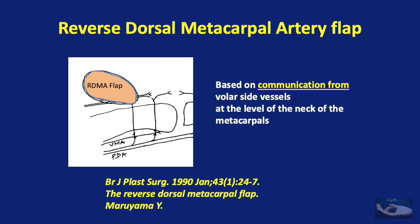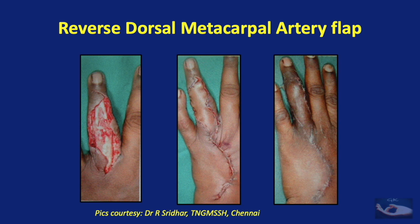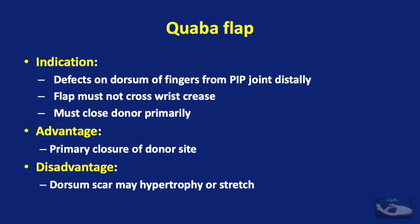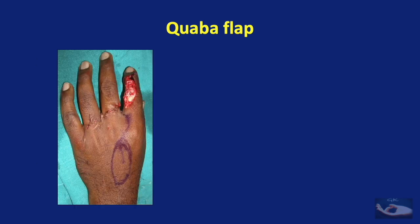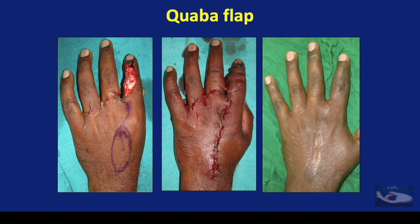The reverse dorsal metacarpal artery flap is based on communication from volar side vessels at the level of the neck of the metacarpals, indicated for defects on the dorsal aspect of the fingers from the metacarpophalangeal joint distally — a single stage procedure. The Quaba flap is based on communication from the bifurcation of the digital artery to the dorsal metacarpal artery at the level of the finger web, sometimes called the commissural artery, indicated for defects on the dorsum of the fingers from the PIP joint distally. When raising this flap, it must not cross the wrist crease and the donor side must be closable primarily.